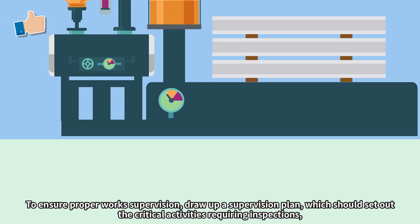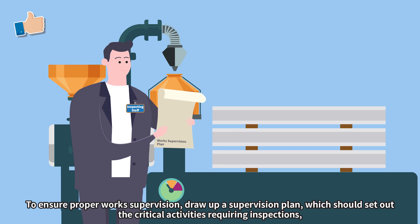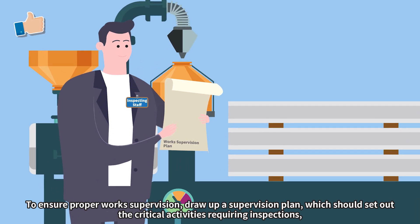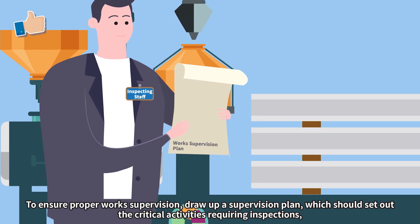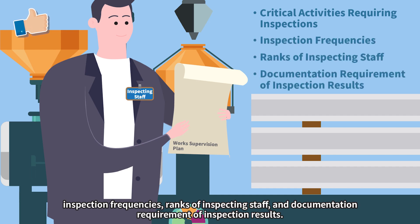To ensure proper work supervision, draw up a supervision plan, which should set out the critical activities requiring inspections, inspection frequencies, ranks of inspecting staff, and documentation requirements of inspection results.